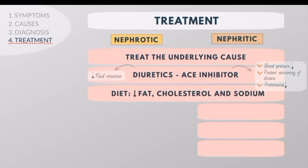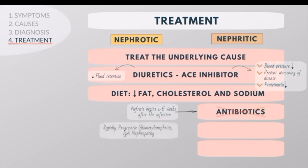Dietary modifications include decreasing fat, cholesterol, water, and sodium intake. Antibiotics are not recommended unless nephritis begins 1 to 6 weeks after an infection. Corticosteroids are recommended for rapidly progressive glomerulonephritis, IgA nephropathy, and related conditions.